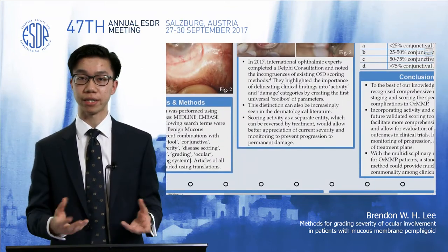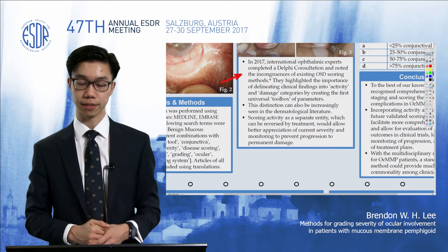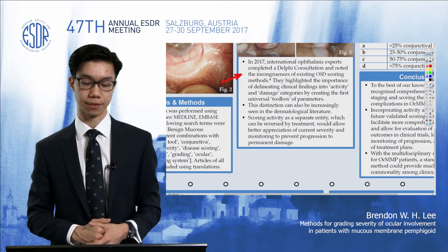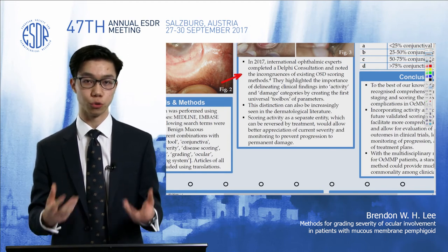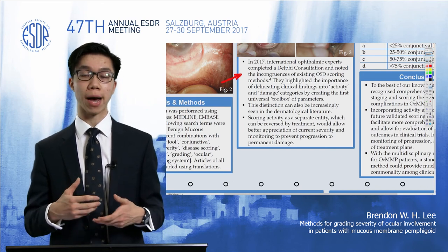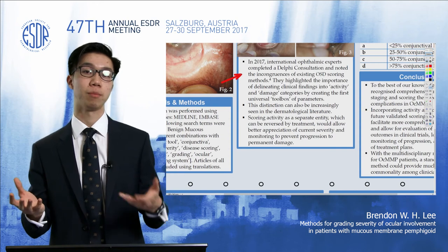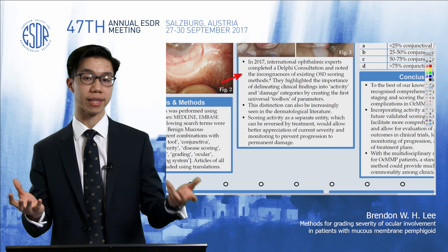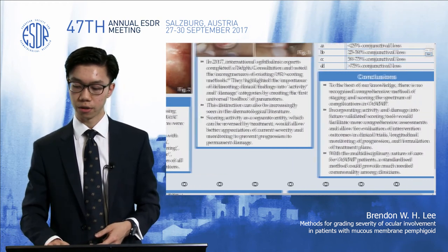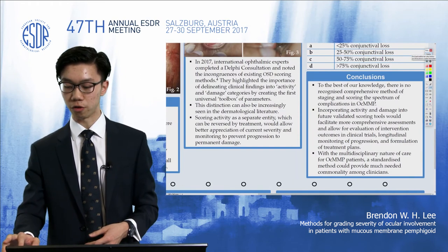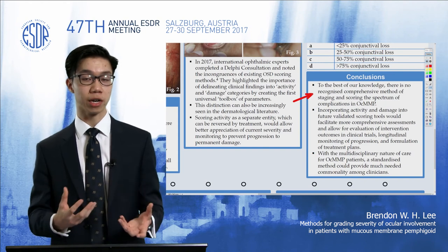Looking at very recent literature, in 2017 an international Delphi consultation was completed on ocular surface disease. This mentioned many of the incongruencies that already existed and pushed a new toolbox of different signs and scores for a more comprehensive assessment. It also explained the importance of delineating between damage and activity — damage is what has already happened and cannot be changed, while activity is what the disease is currently doing to the patient, which can be modified using treatments. We concluded that for ocular involvement in MMP, existing scoring tools look at damage and quantification of area involved, but none really look at activity.